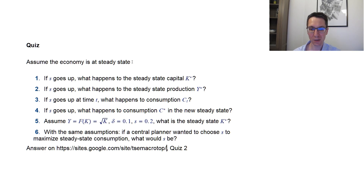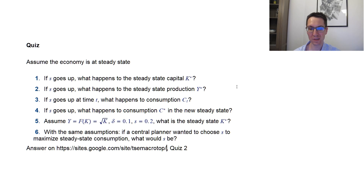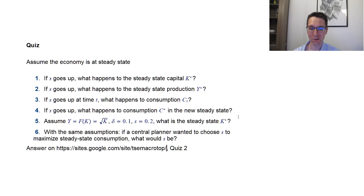So assume that the economy is at steady state. We consider the Solow model with only capital. If S (savings rate) goes up, what happens to the steady state capital K*? If S goes up, what happens to steady state production Y*? If S goes up at time T, what happens to consumption at time T? Note the difference: this is steady state vs. at time T. If S goes up, what happens to the new consumption at the new steady state C*?